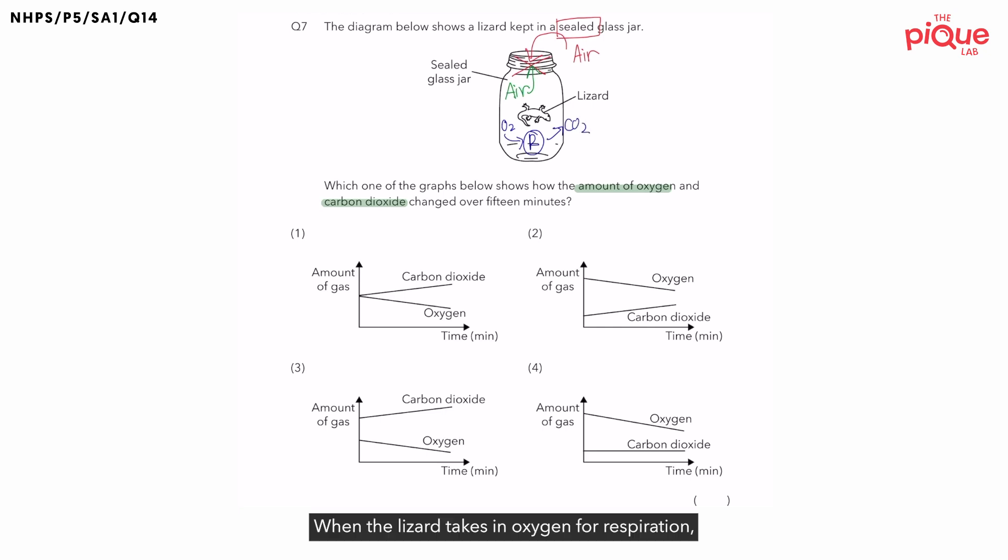When the lizard takes in oxygen for respiration, the lizard is removing oxygen from inside the glass jar. Therefore, the amount of oxygen in the glass jar would decrease. And during respiration, carbon dioxide is being produced and released into the glass jar. Therefore, amount of carbon dioxide in the glass jar would increase. So in the graphs below, we should be looking for a decreasing trend for the oxygen and an increasing trend for carbon dioxide.